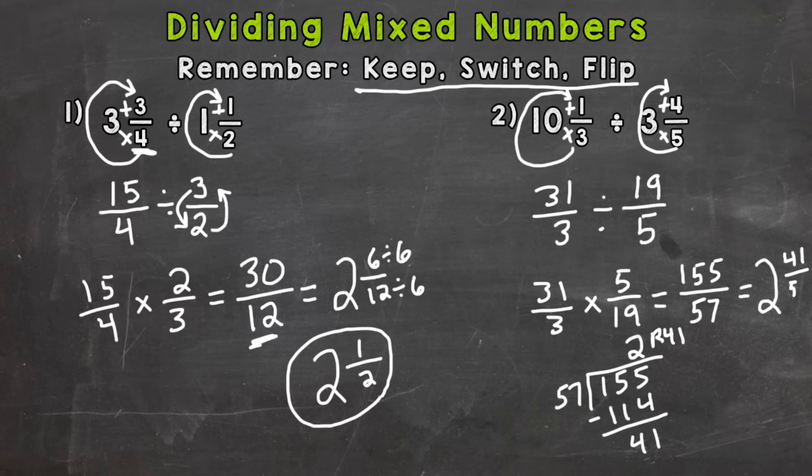So two whole 57s out of 155 with a remainder of 41, keep the denominator of 57 the same. Now 41 over 57 is in simplest form. There's no other common factors between the two than 1. So it is done. And our answer is 2 and 41 57ths.